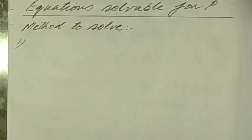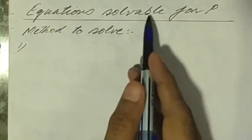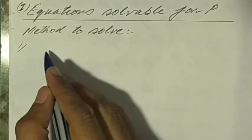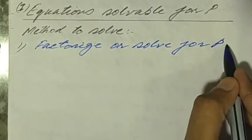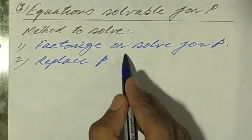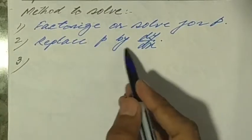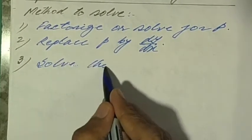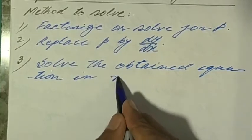There are four types of such differential equations. The first type is equations solvable for p. The method to solve these equations: Step 1 - factorize or solve for p. Step 2 - replace p by dy/dx. Step 3 - after replacing p by dy/dx, we get a differential equation in terms of x and y only; solve the obtained equation in x and y.